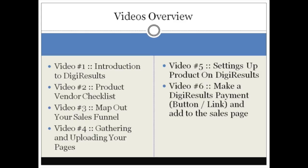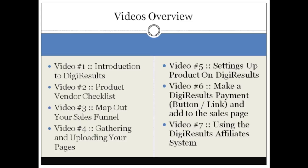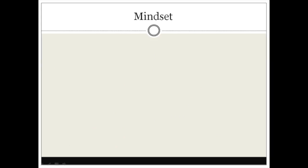Video six shows you how to get the Digi Results payment link or button. If you want to use their buttons you can, or if you have your own button on your sales page I'll show you how to add the link to it. Then we'll add that to the sales page and upload it to your website via FTP. Video seven shows you how to use the Digi Results affiliate system.